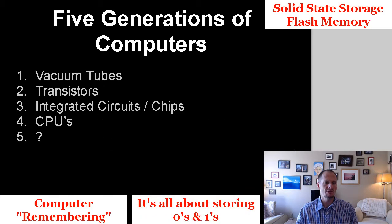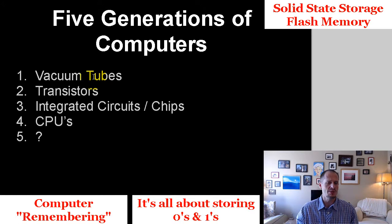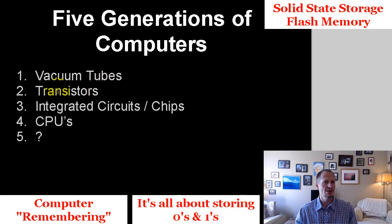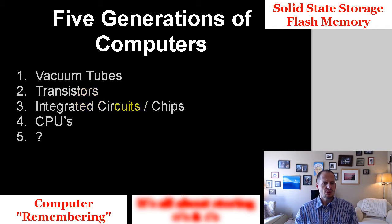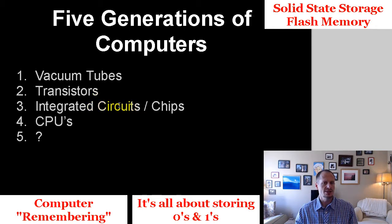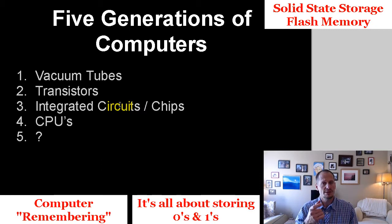We saw that with the five generations of computers, where vacuum tubes were the technology used to remember zeros and ones, then transistors became the technology, and then chips were created with integrated circuits on silicon wafers. Those integrated circuits, chips — those are kind of synonymous terms on silicon wafers — that is the technology used to remember zeros and ones today.